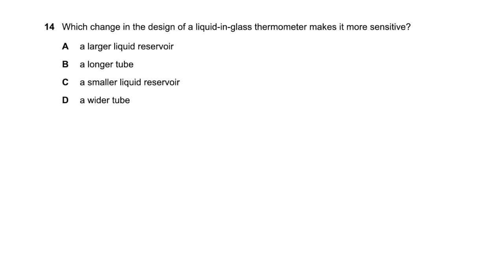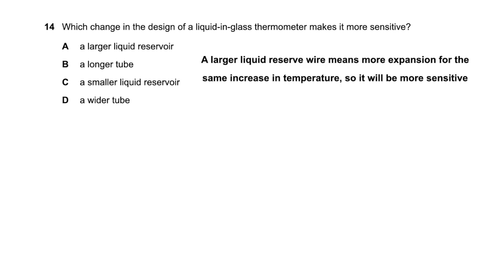Which change in the design of a liquid-in-glass thermometer makes it more sensitive? A longer tube increases the range. A wider tube makes it less sensitive. A smaller liquid reservoir also makes it less sensitive. A larger liquid reservoir makes it more sensitive. So option A (larger liquid reservoir) is the right answer.